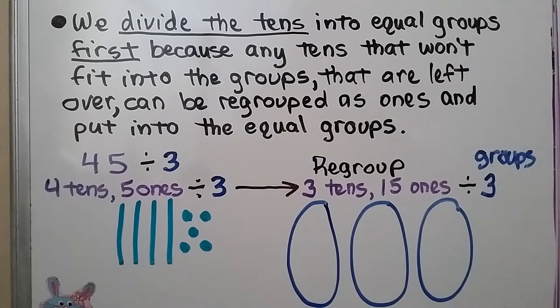We divide the tens into equal groups first because any tens that won't fit into the groups can be regrouped as ones and added into the equal groups.